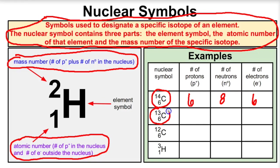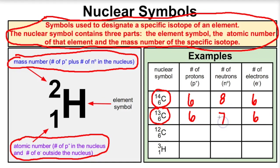What about this isotope of carbon? Its atomic number is six, so that means it has six protons in its nucleus and six electrons outside its nucleus. The mass number minus the atomic number gives us seven, so there are seven neutrons inside of its nucleus.